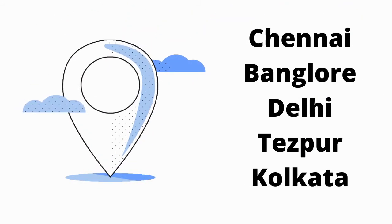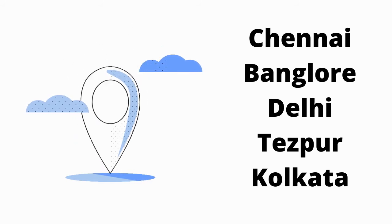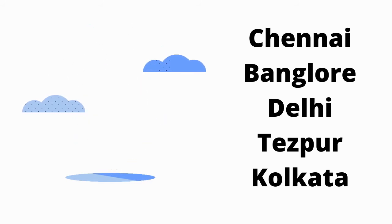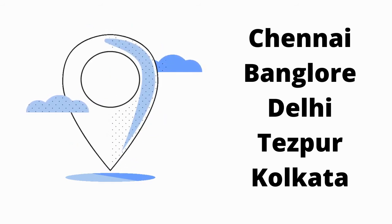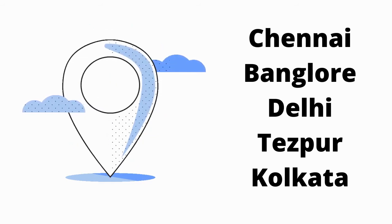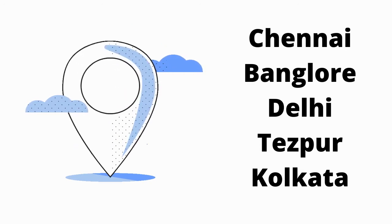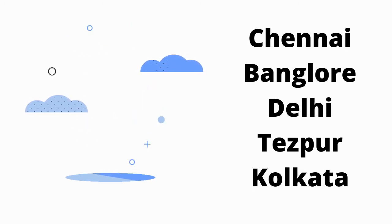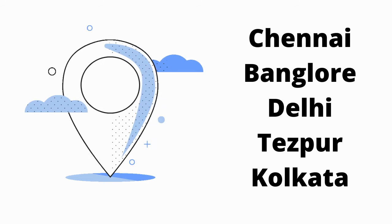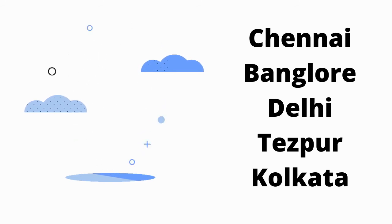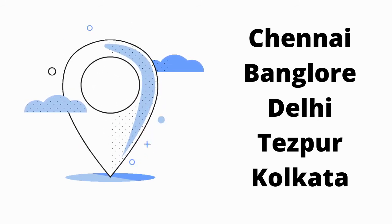Indian Statistical Institute is all over India. We have a channel. The channel is Nelsa Manikam Road, Aminji. Other than that, there are other cities: Kolkata, Delhi, Tejpur, and Bangalore.